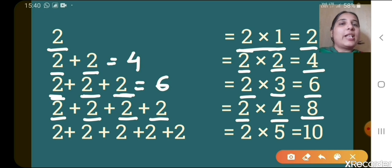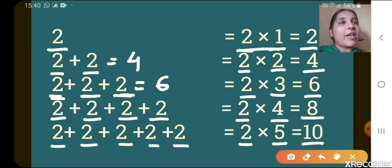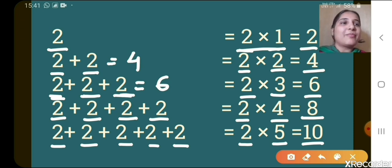Now in this one you can see how many times 2 is added here — 1, 2, 3, 4, 5 — so 2 five times gives 10. In this way only we write all the tables, isn't it?